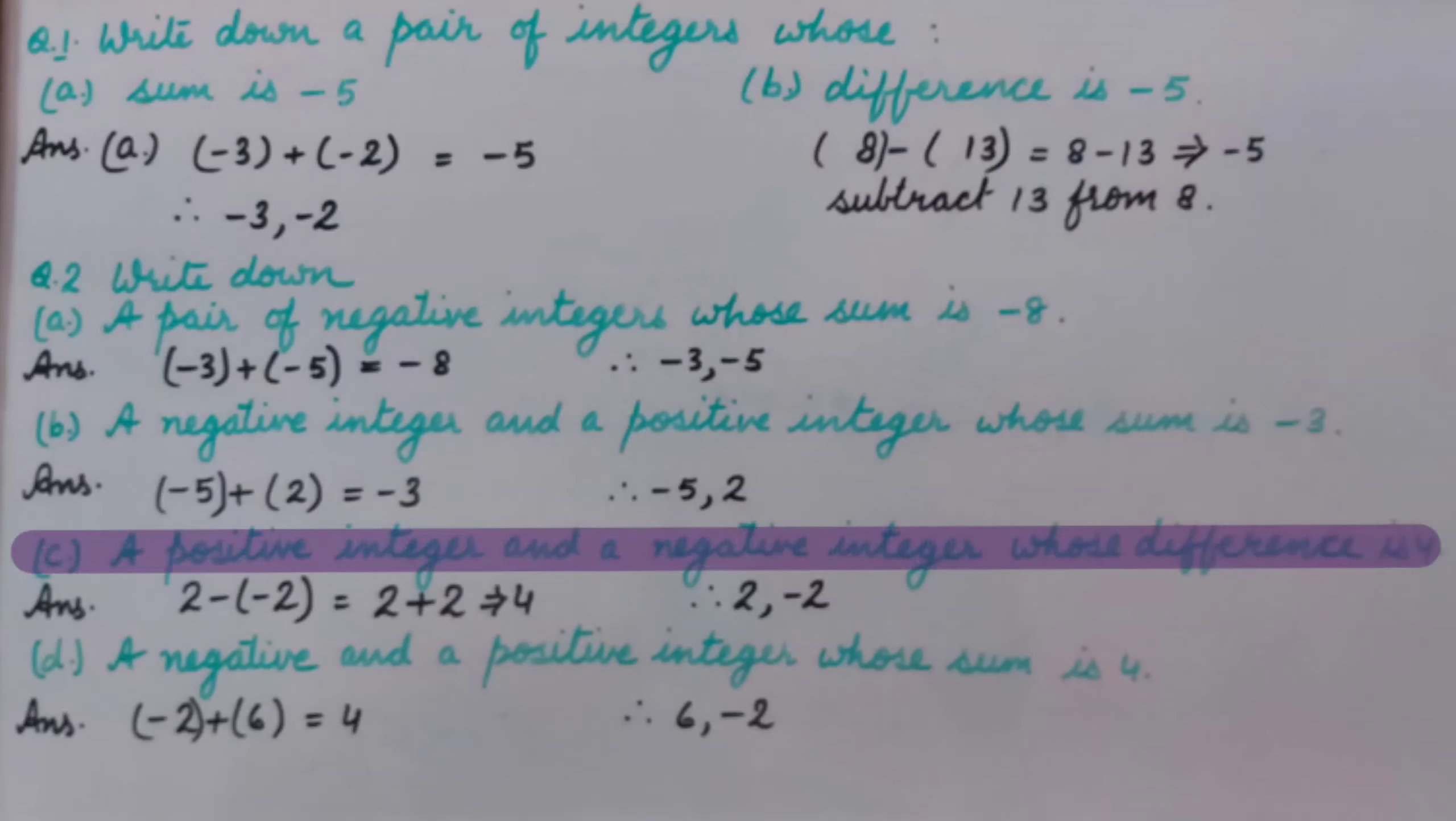C part, a positive integer and a negative integer whose difference is 4. Here we have to take one positive and one negative integer whose difference is 4. It means the positive integer we will take first.